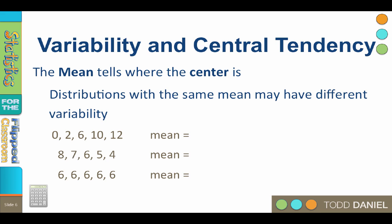It is important to remember that variability and central tendency measure two different things, and they are independent of each other. The mean tells us where the center of the data is. But distributions with the same mean may have different variability. What is the mean of this first data set? The mean is six. But look at the highest and lowest numbers — there's a lot of variability here.